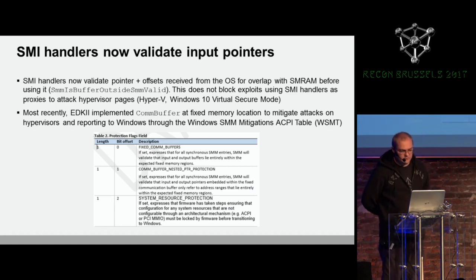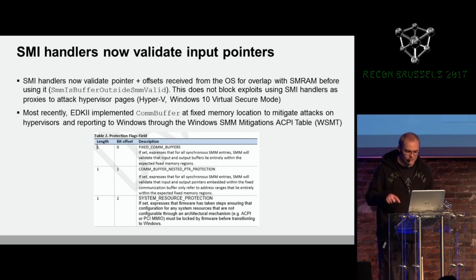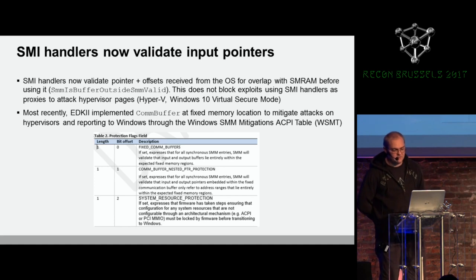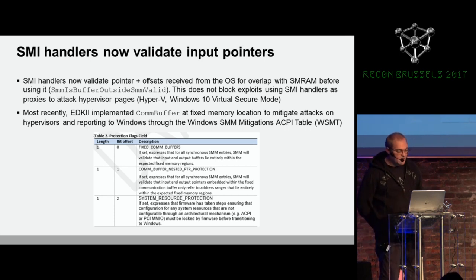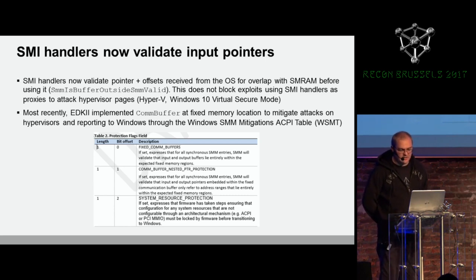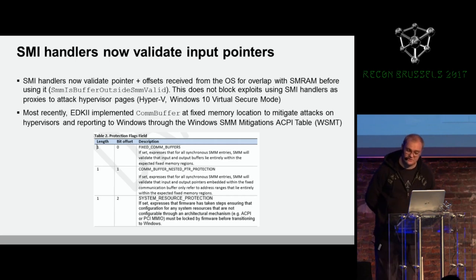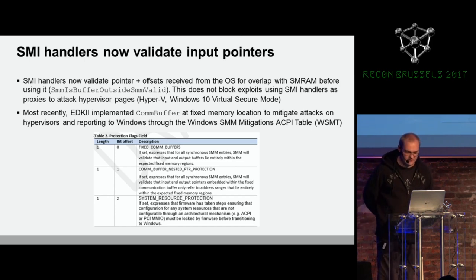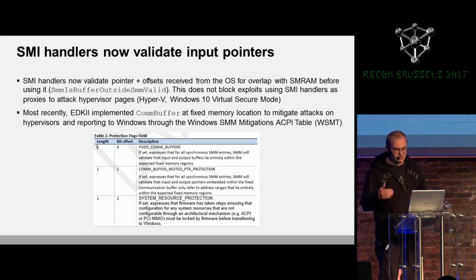So how did the community and vendors react and fix this? There is a protection — which I already mentioned — to check that the address is not pointing to SMRAM, through a function called SMM is buffer outside SMM valid. It fixes the problem with the firmware, but it doesn't fix the problem with the hypervisor bypass and privilege escalation. So to fix this vulnerability, another mitigation was added to limit the COM buffer address. There is an ACPI table named Windows SMM Mitigation ACPI table, which should be initialized by the firmware and written by the operating system, passing the configuration of the mitigation. It has a couple of bits — one defines that the common buffer is fixed and checks all input and output buffers; another is nested, meaning that if you have a pointer inside the COM buffer, it checks those pointers as well.